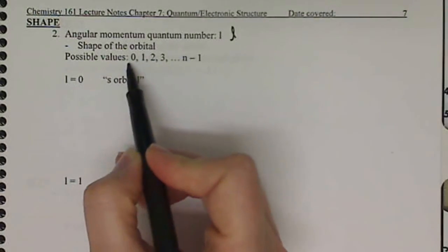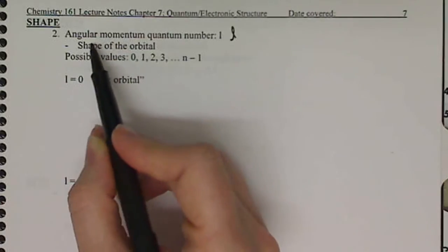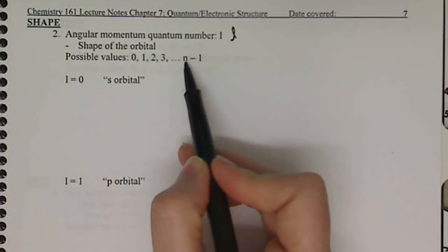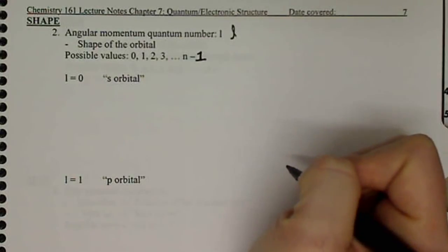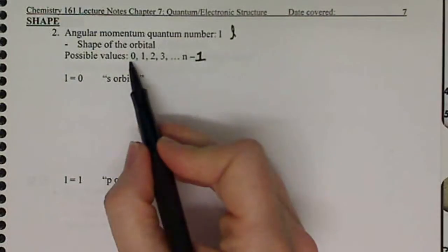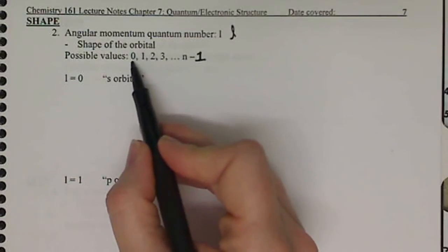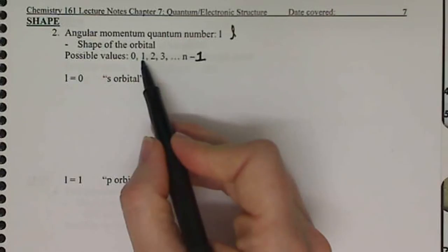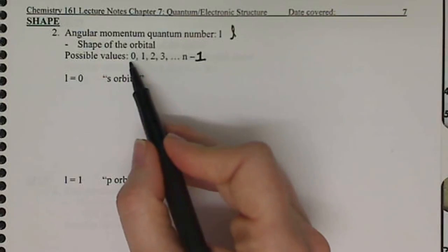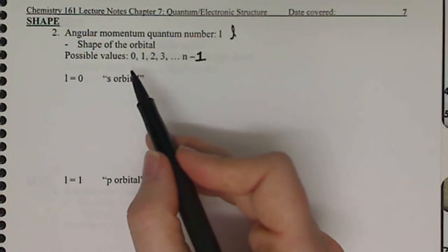The possible values of the angular momentum are going to depend on n, and essentially it's going to be any integer of n minus 1. So l can equal 0 if n equals 1, l can equal 0. If n equals 2, l can equal 1 and 0. If n is equal to 3, l can equal 2, 1 and 0, and so on and so forth.